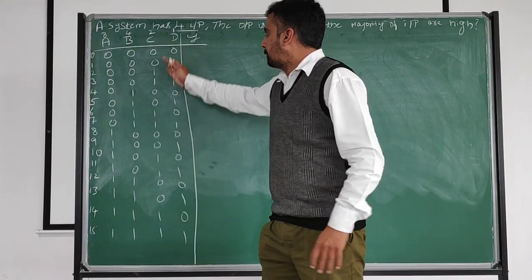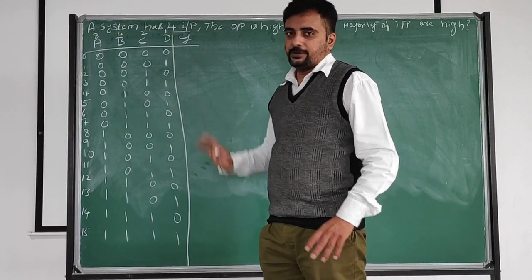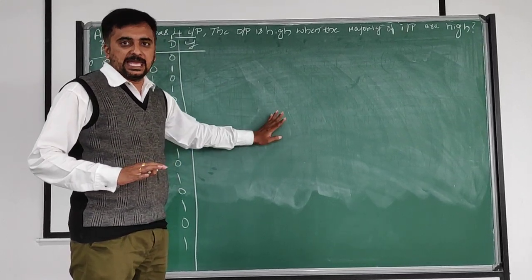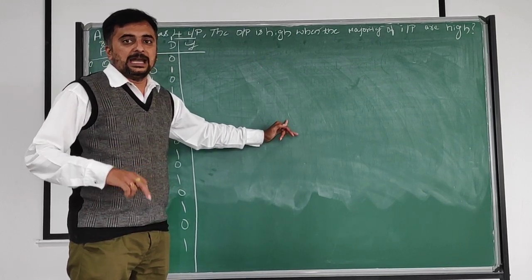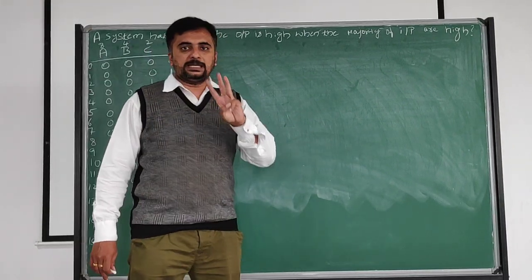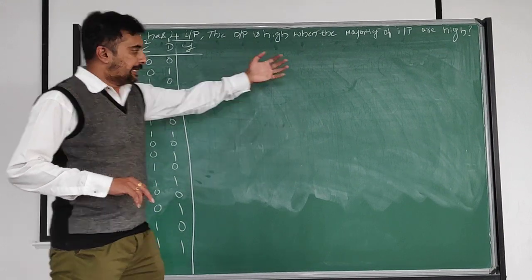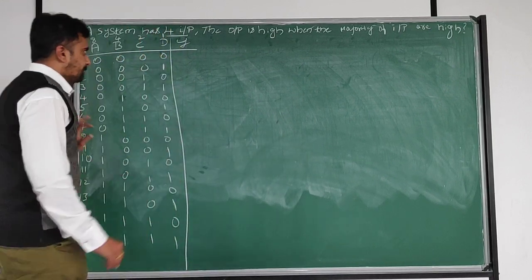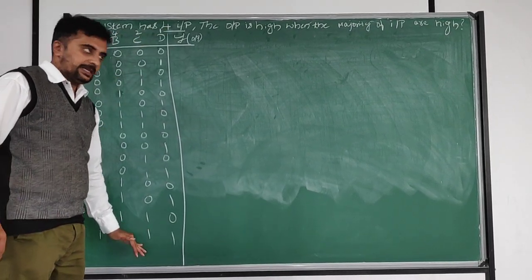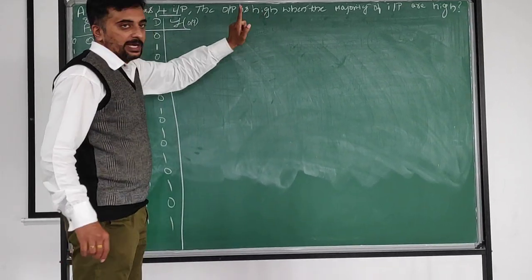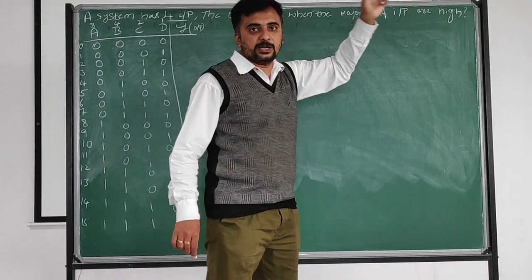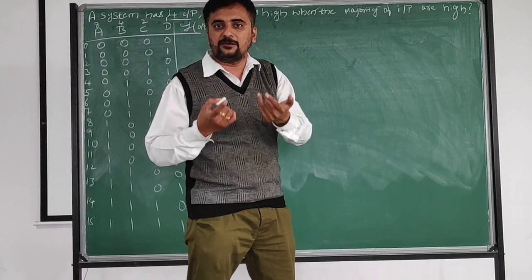This is the input for 4 variables. Before writing the output, we have to draw a truth table, draw a K-map, write the summation form, write the expression, and finally design the circuit using NAND gate only. Totally we have to cover three concepts: drawing a truth table, writing the K-map, and circuit. The output is high - high means 1. We have to indicate it as 1 where the majority of inputs are high; otherwise, remaining will be 0.